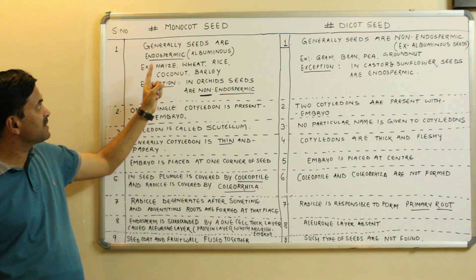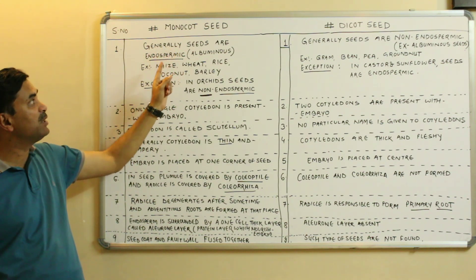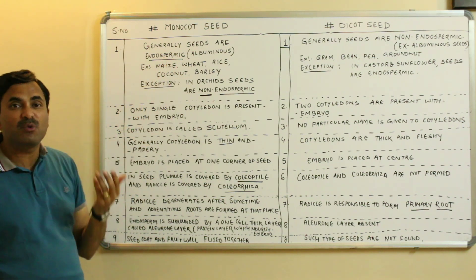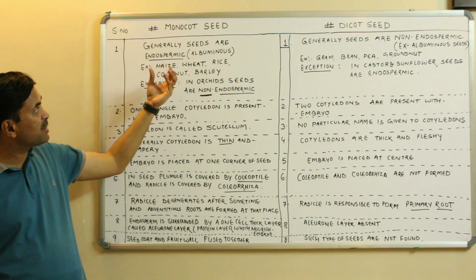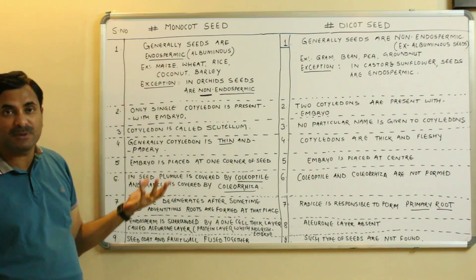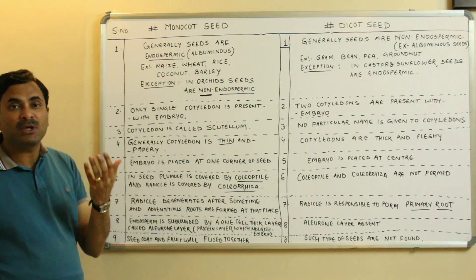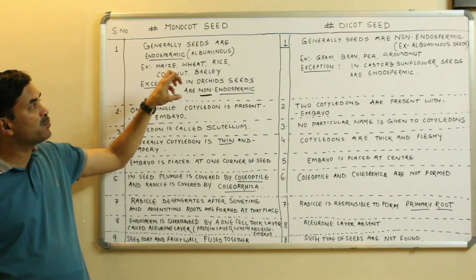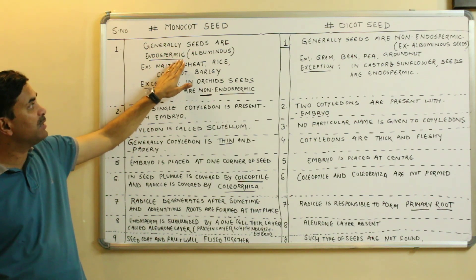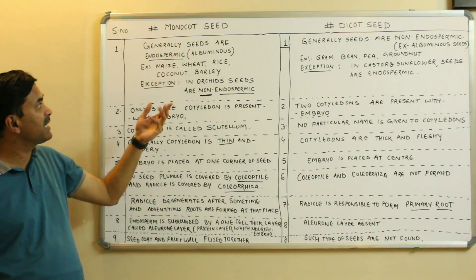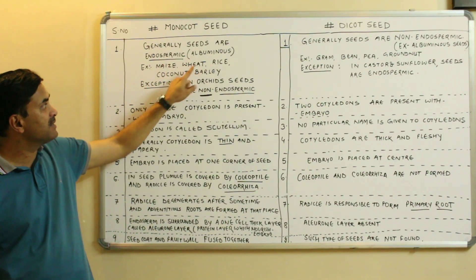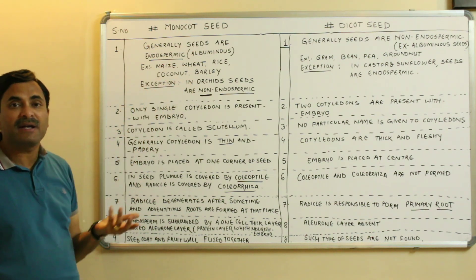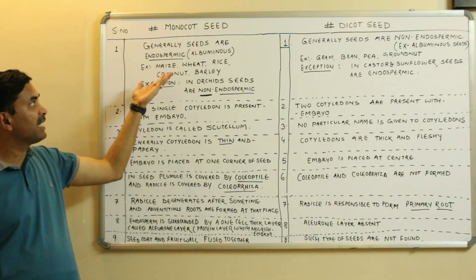The first difference: monocot seeds are generally endospermic, meaning they are albuminous. At maturity the seeds have endosperm because during the development of the embryo the endosperm is not fully utilized and is still found in the seed. Examples include maize, wheat, rice, coconut, and barley — all monocot seeds that are endospermic at maturity.